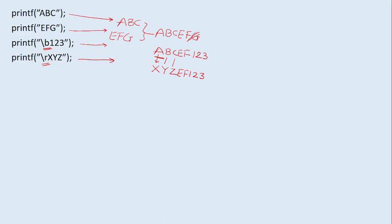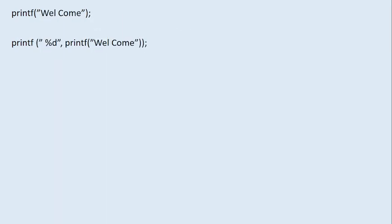To summarize: backslash b removes the last character, and backslash r moves to the first column of the current line and starts overwriting the data. It is also possible that in some examples they may give backslash a, which is used for a beep sound — it just gives a beep if your speaker is connected and won't affect your output. I hope this clears your doubt regarding backslash b and backslash r.